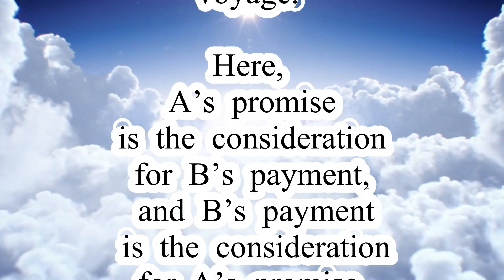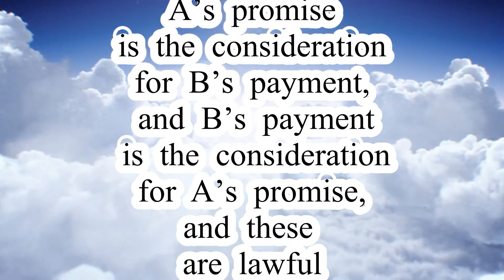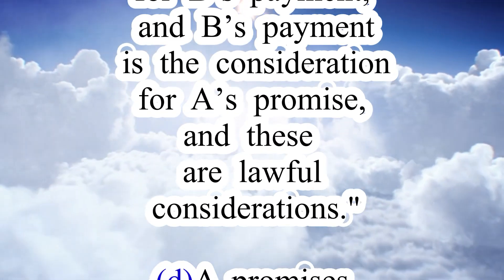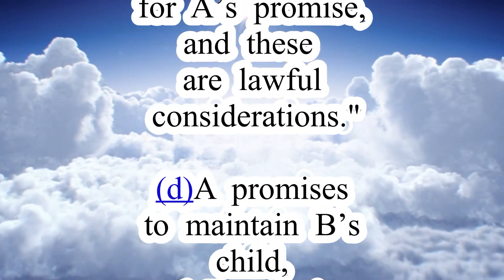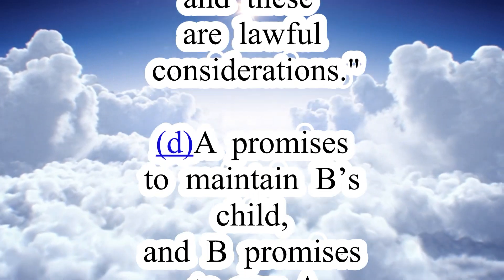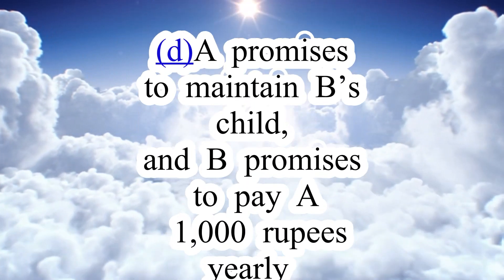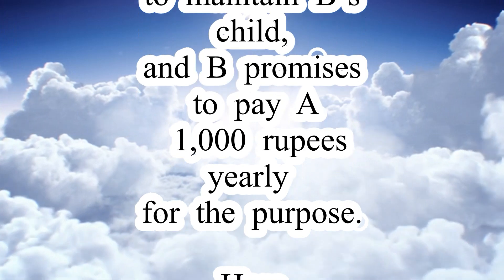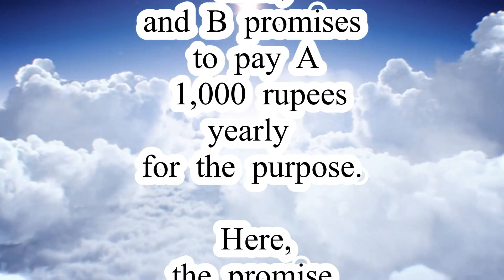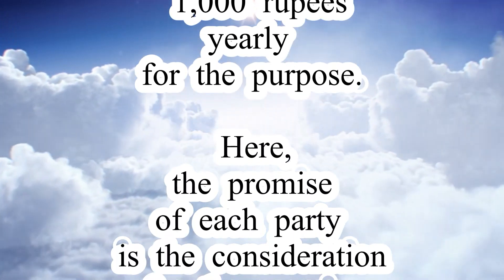Illustration C: A promises, for a certain sum paid to him by B, to make good to B the value of his ship if it is wrecked on a certain voyage. A's promise is a consideration for B's payment, and B's payment is a consideration for A's promise. These are lawful considerations.